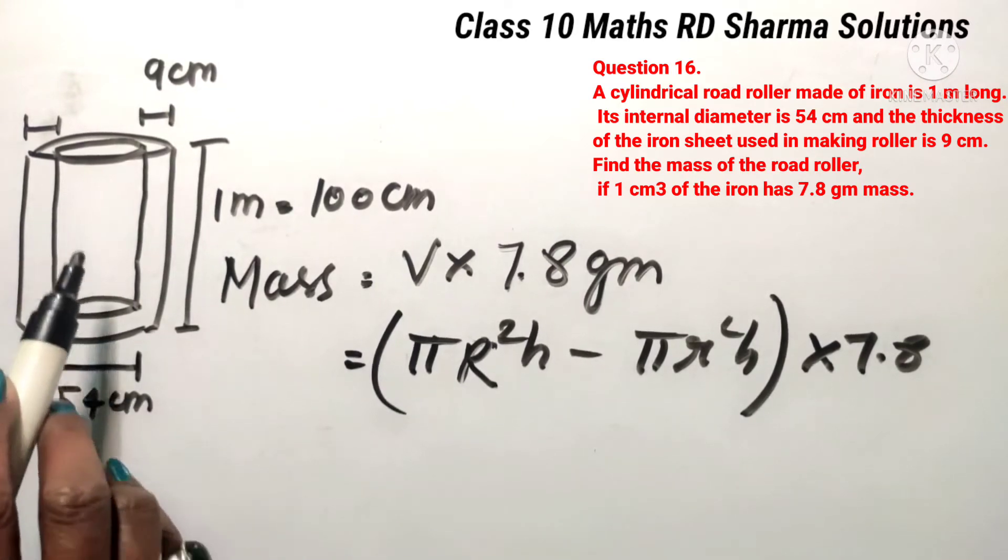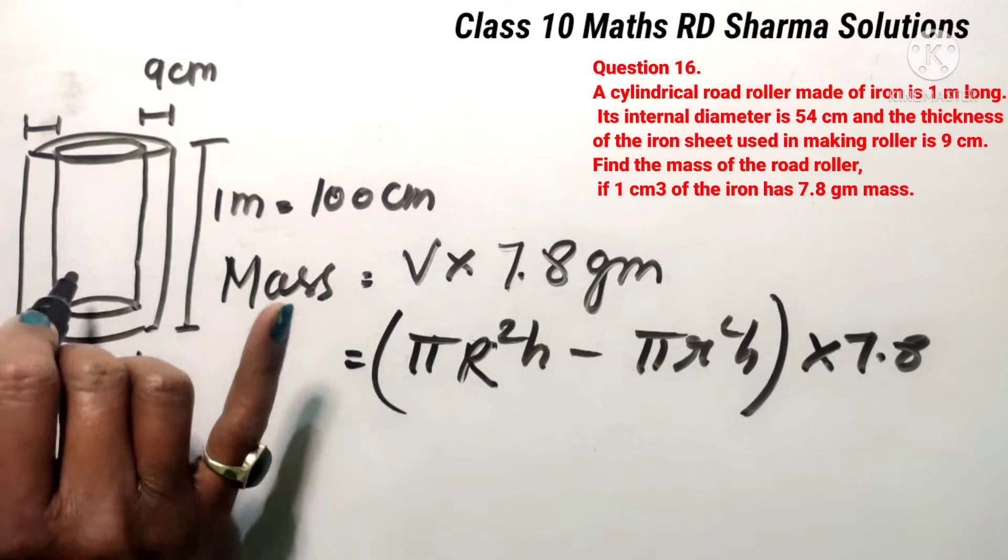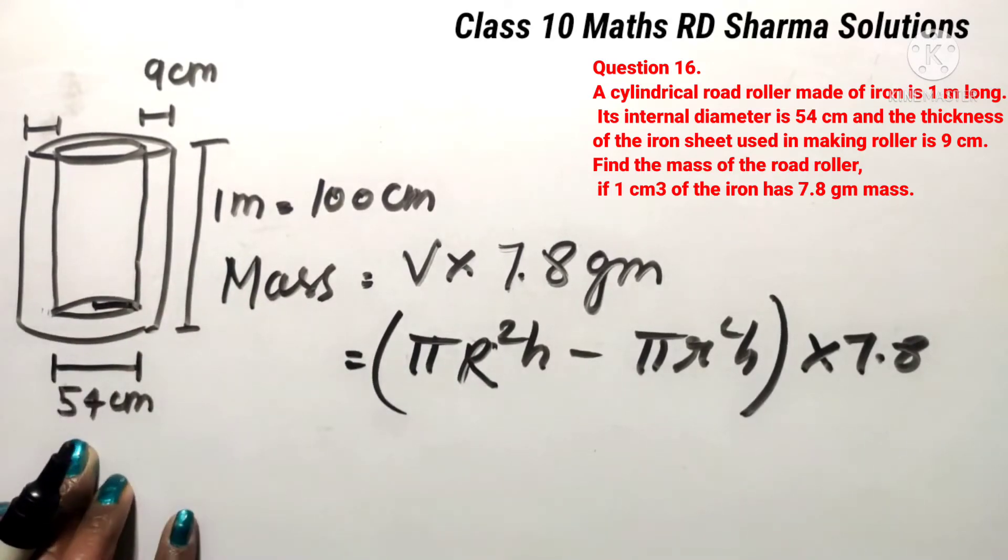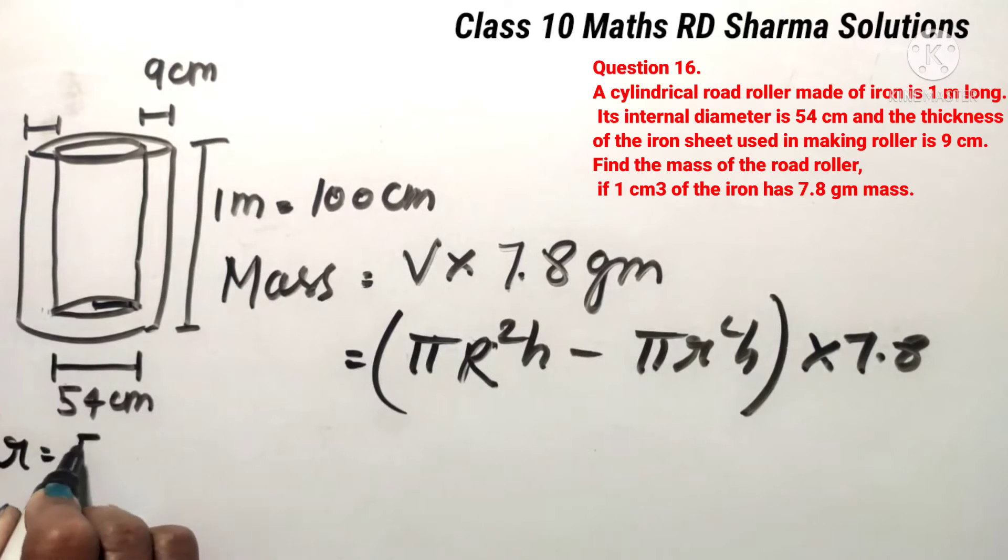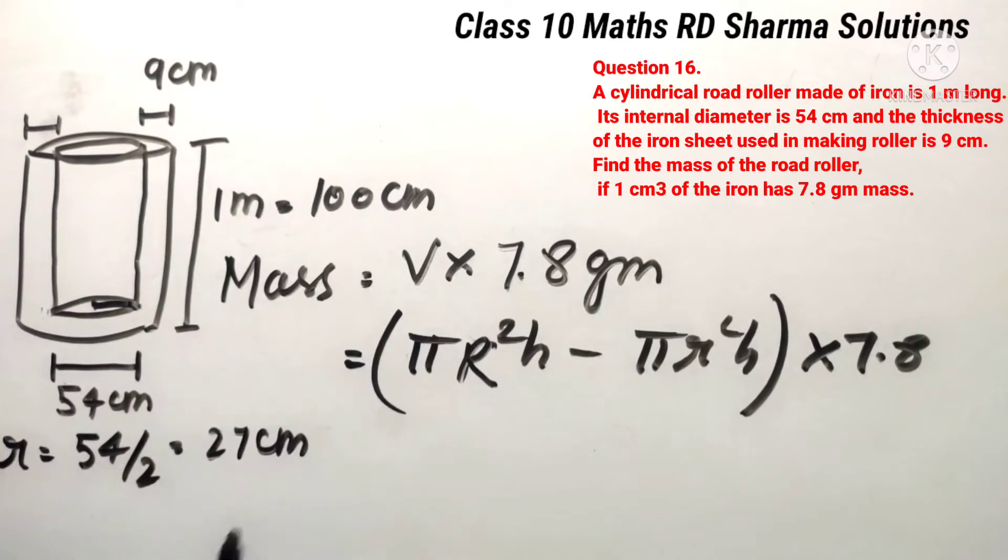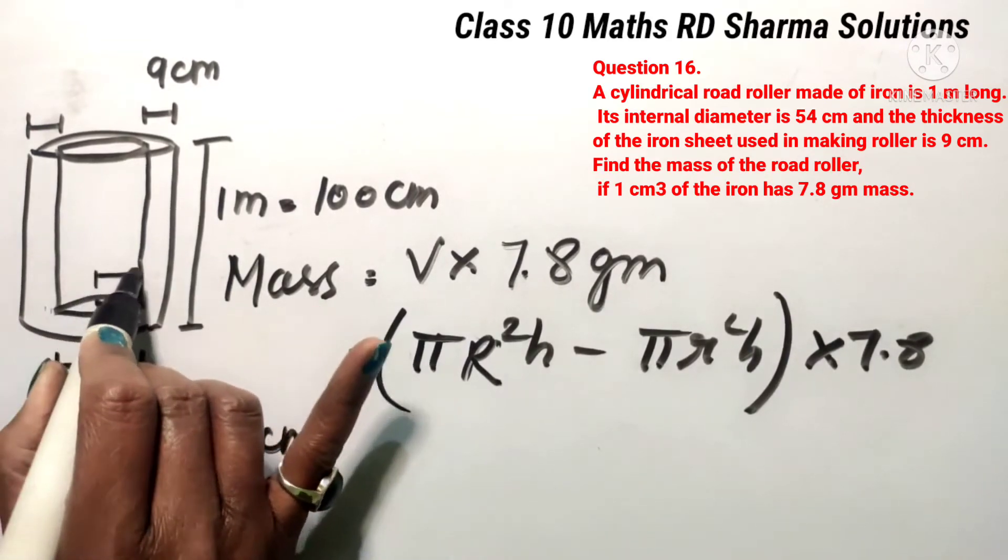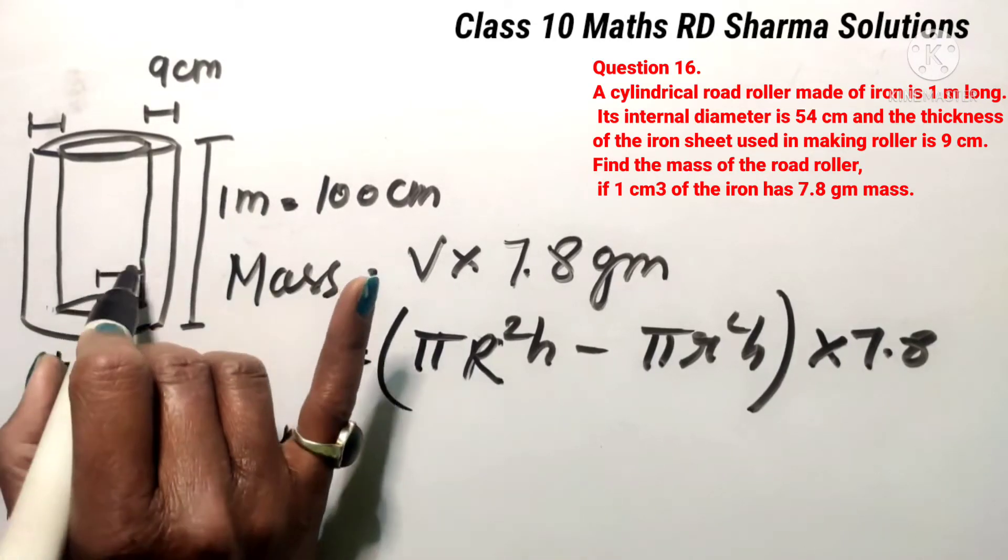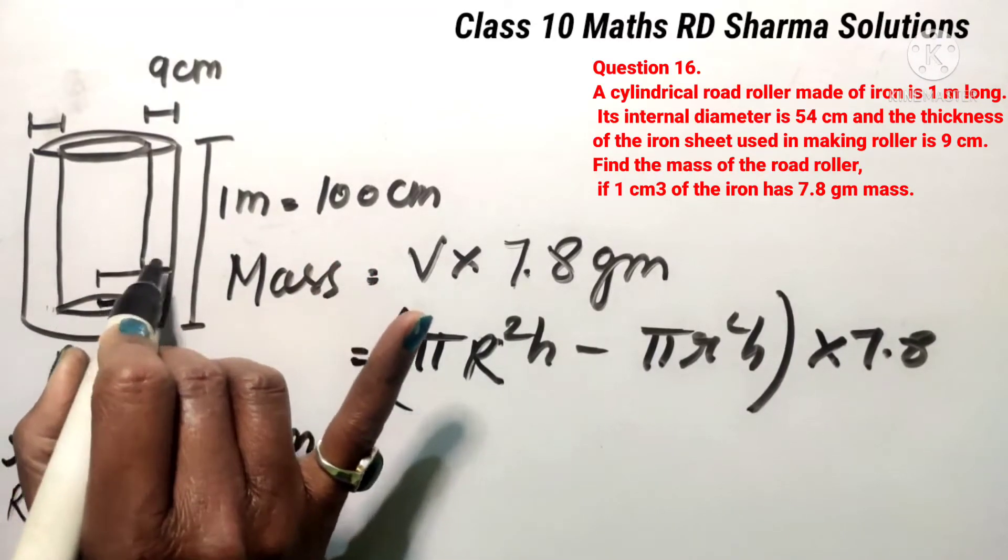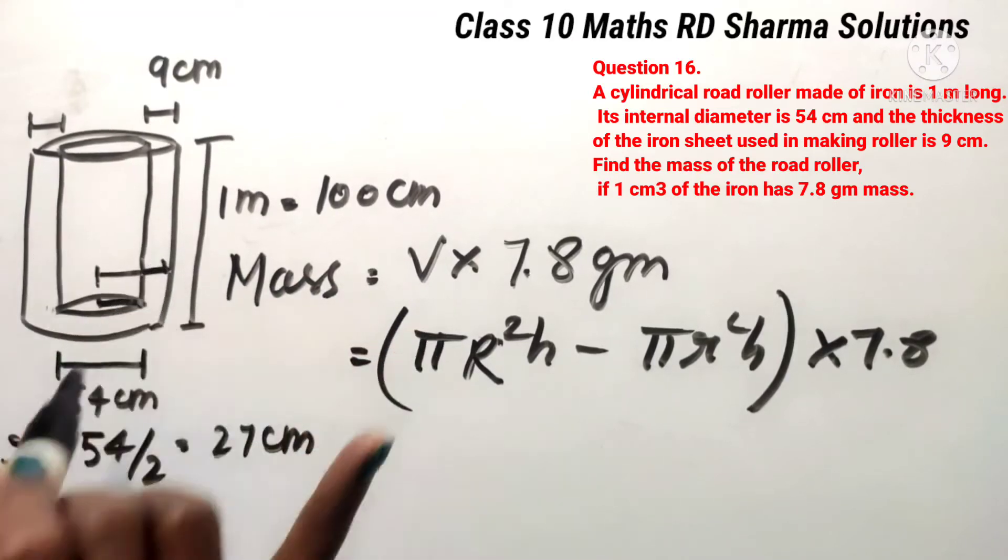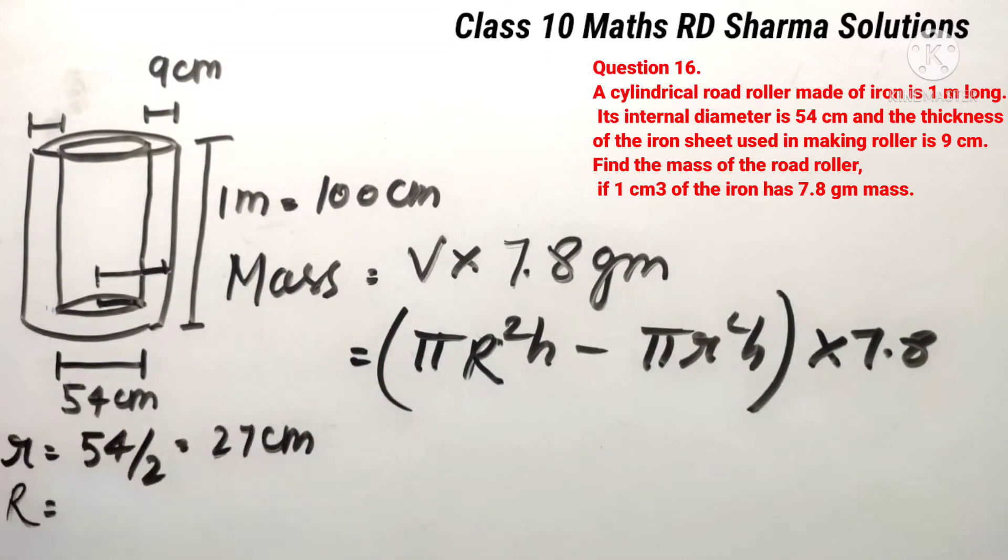Now we write capital R and small r value here. Small r value means that the inner cylinder's radius, so the inner cylinder's diameter is 54, so you can write small r value, 54 by 2 which is 27 cm. But as we need capital R, so we need the radius from the outer cylinder.